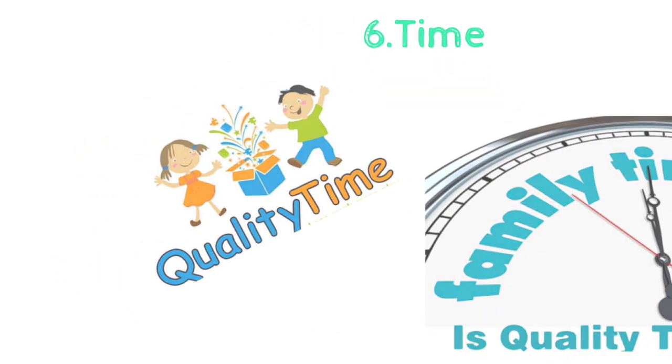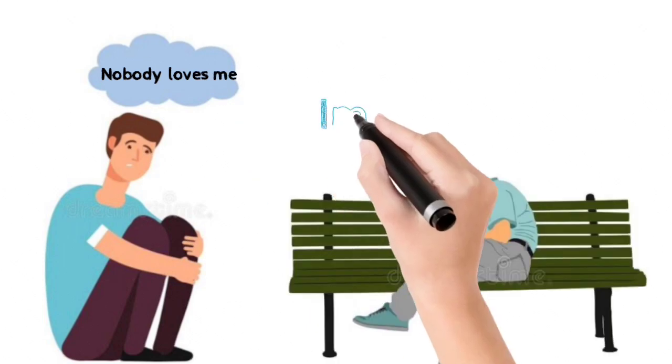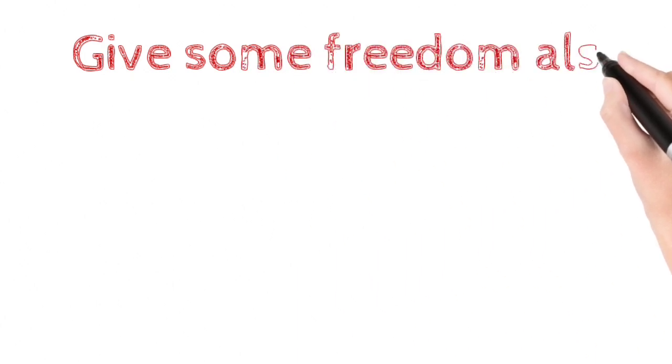Sixth is time and space. Take out some time for your loved ones. If they feel left out or too lonely, aggression and mood swings are obvious. Give them some freedom as well. Don't cage them.